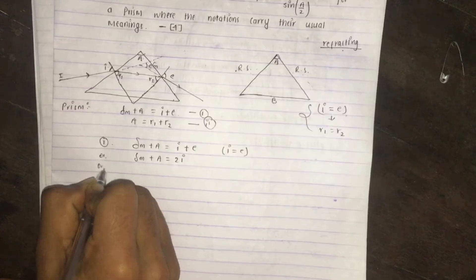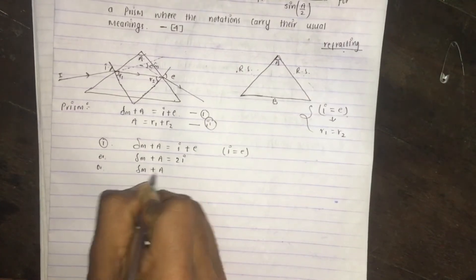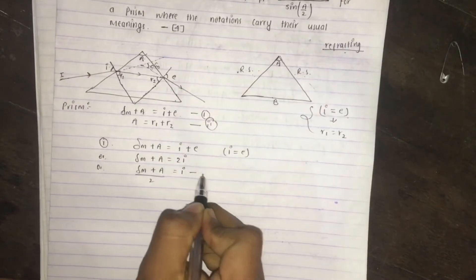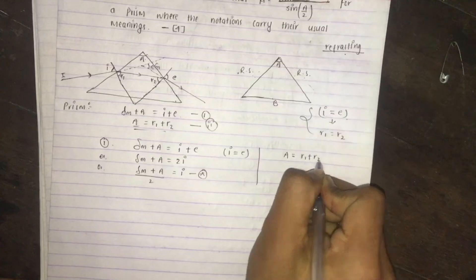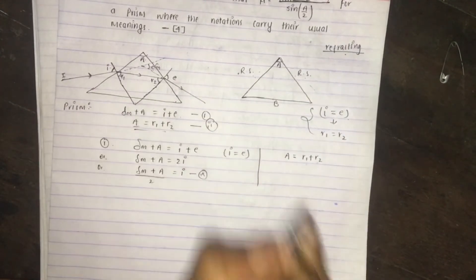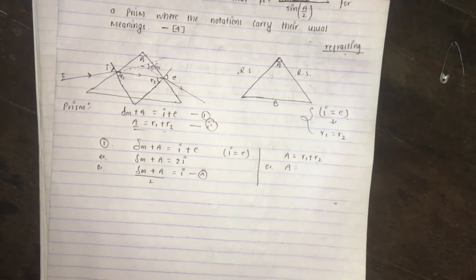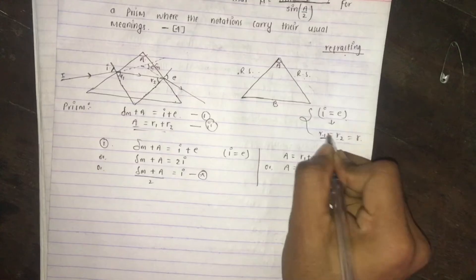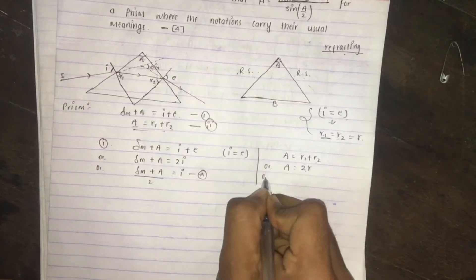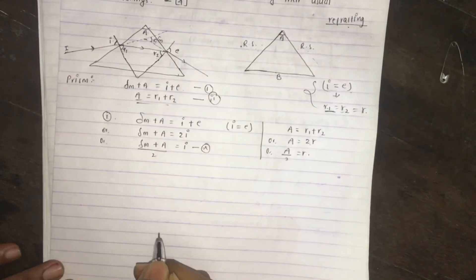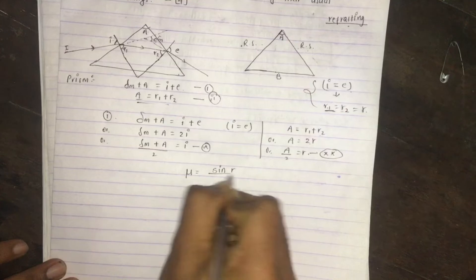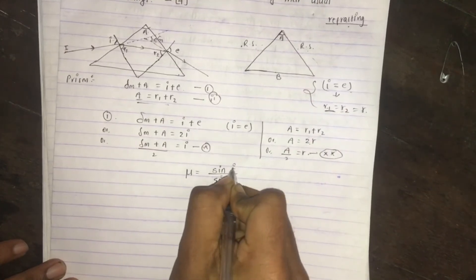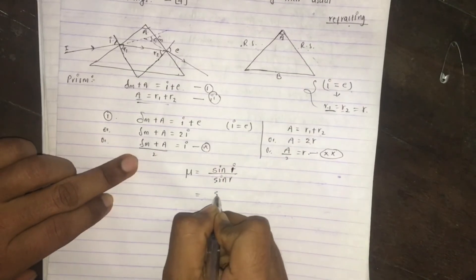At the angle of incidence, applying Snell's law: mu equals sin(i) divided by sin(r). Substituting i equals (d_minimum plus A)/2 and r equals A/2, we get mu equals sin((A + d_minimum)/2) divided by sin(A/2).